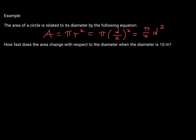Let's check out our first example. The area of a circle is related to its diameter by the following equation. We know the formula: the area of a circle is equal to pi r squared, but the radius is exactly half the diameter. So it can be rewritten as pi times half of d squared, which is equivalent to pi over 4 times d squared. The question is: how fast does the area change with respect to the diameter when the diameter is 10 meters? They're not asking us for what the area is — they're asking how fast the area is changing, the rate of change of the area with respect to the diameter.